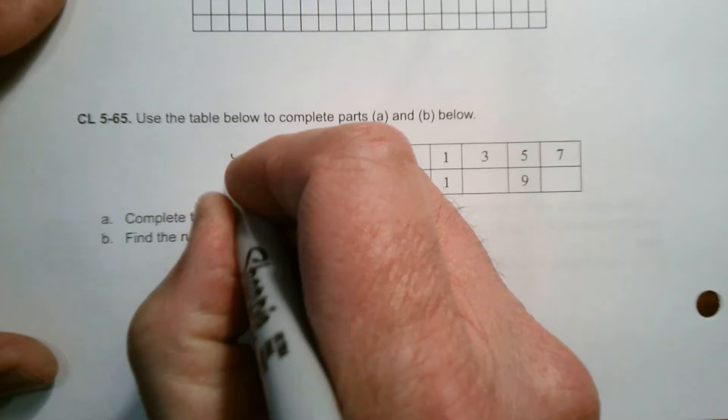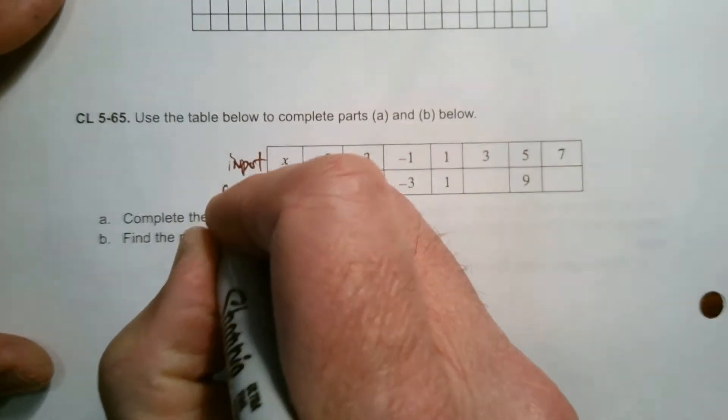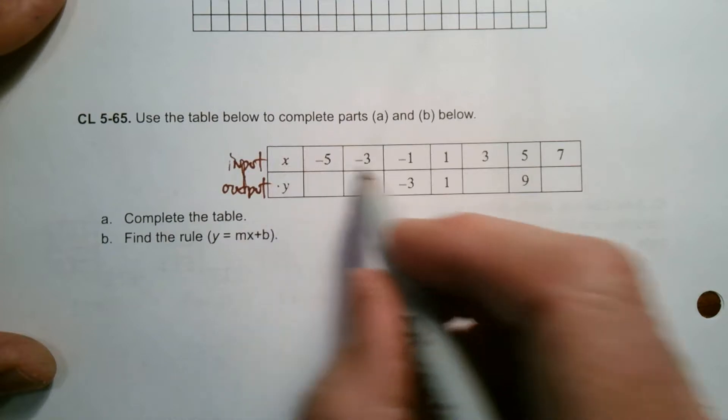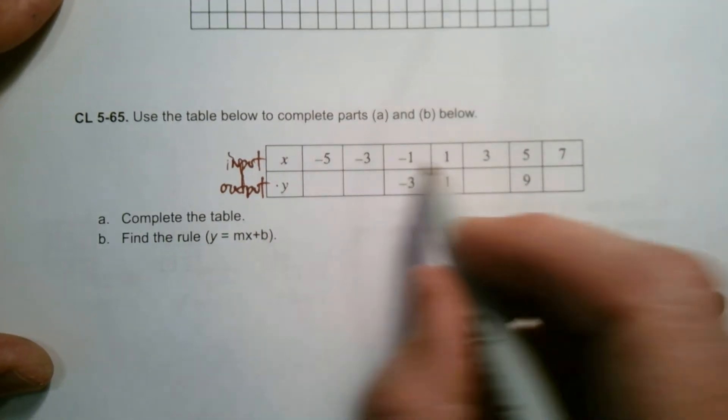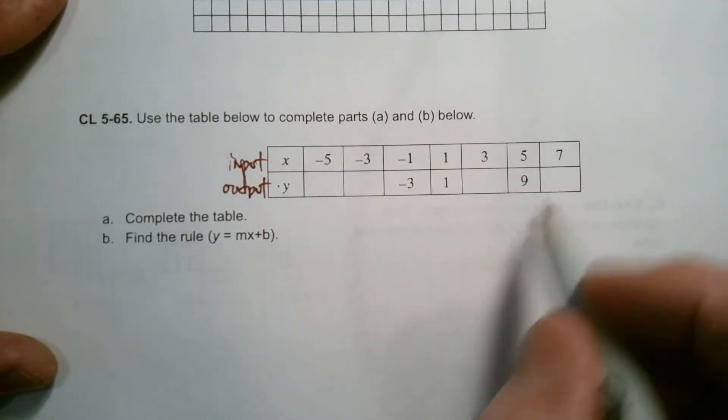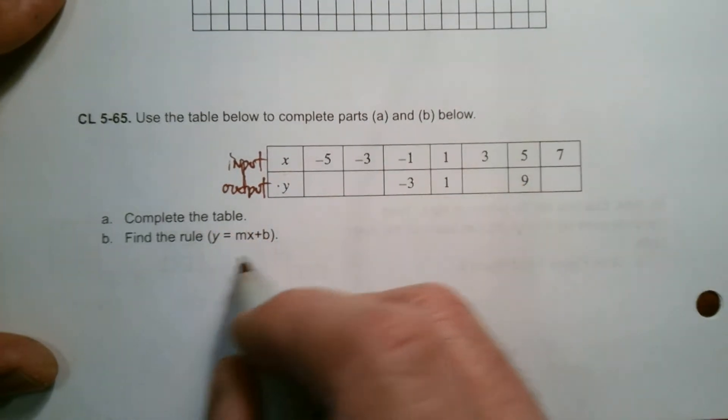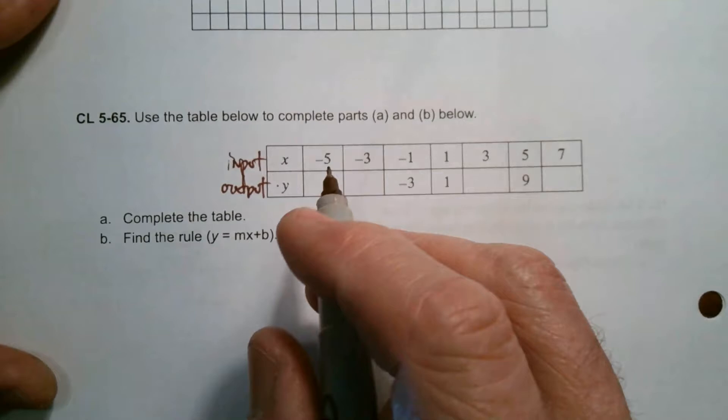Your X is your input, your Y is your output. So to determine what do I do to the input that creates these output values, where is it consistent, and what is that rule and put it in terms of Y equals MX plus B.